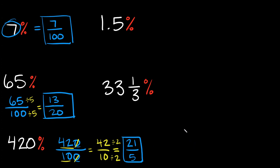Hopefully those weren't too bad. Now let's do two more examples — they require a little bit more work. Here we have 1.5%. Again, whatever number you have here just put it over 100, so 1.5 over 100.